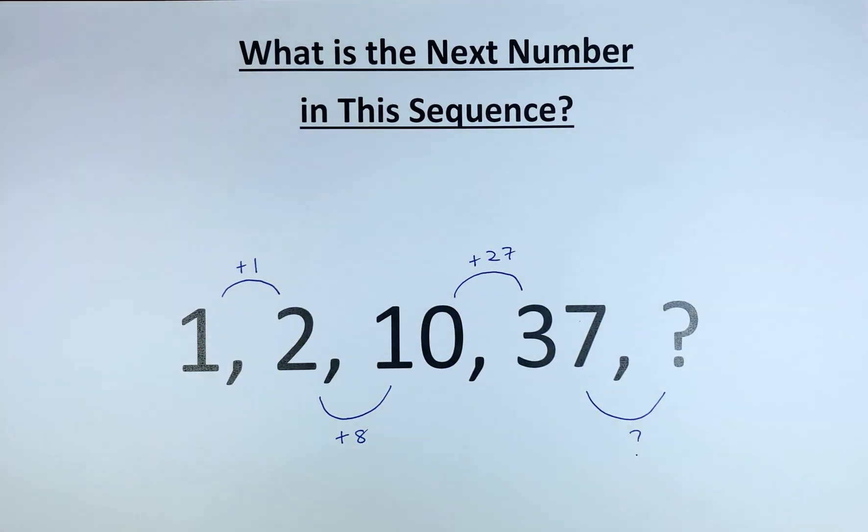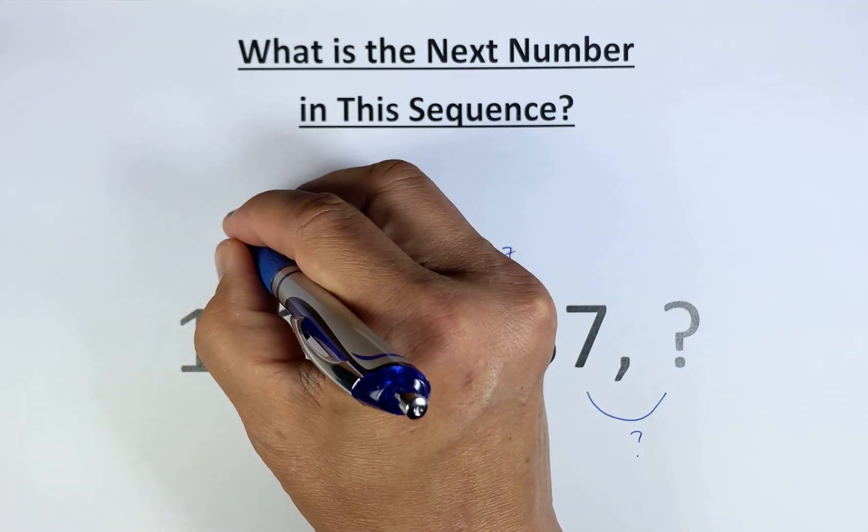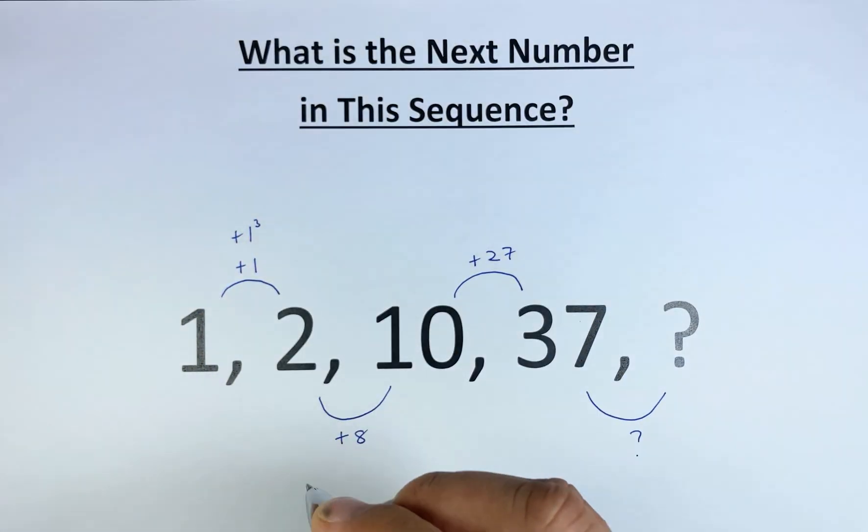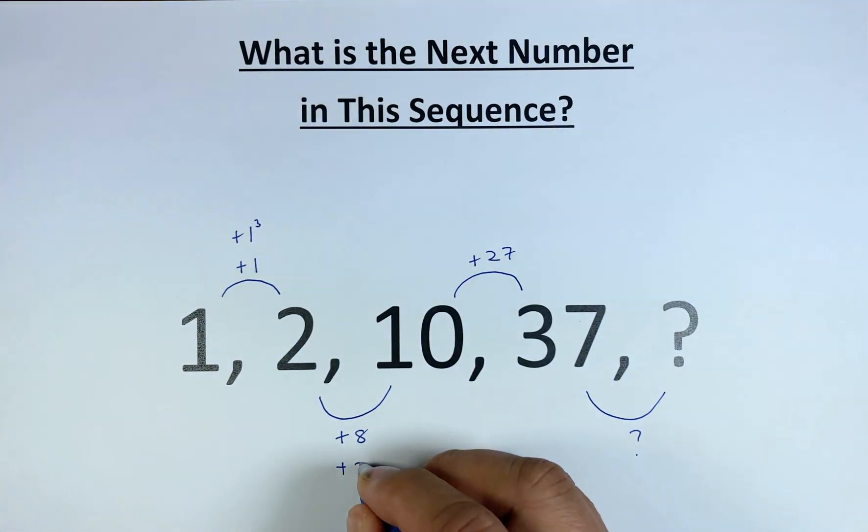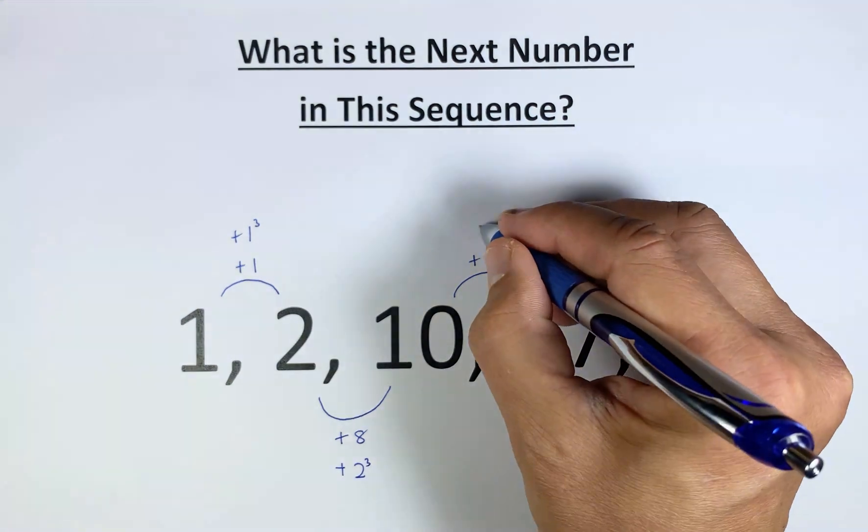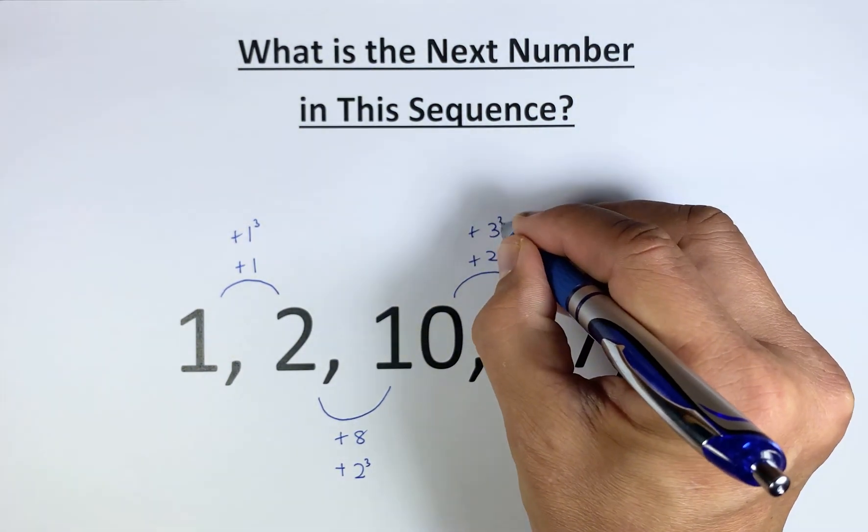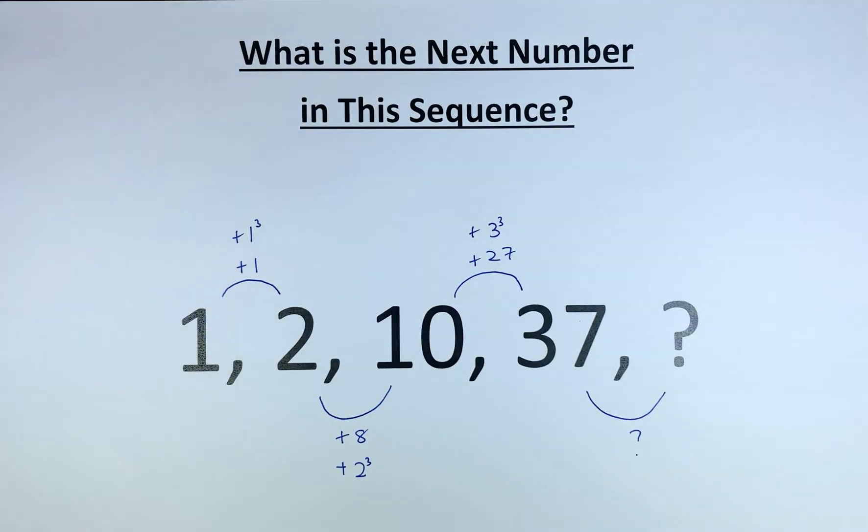So what you do, you look at the numbers. 1 is actually the same as plus 1 cubed. 8 is the same as plus 2 cubed. And 27 is the same as plus 3 cubed. So to get from 37 to the question mark, we add plus 4 cubed.